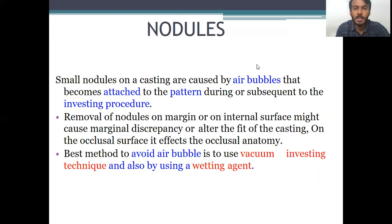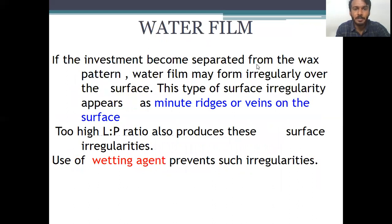On the occlusal surface, nodules usually affect the occlusal anatomy. The best method to avoid air bubbles is to use the vacuum investing technique and also by use of a wetting agent. Regarding water filling — if the investment becomes separated from the wax pattern, water filling may form irregularly over the surface. This type of surface irregularity appears as minute ridges or veins on the surface, and is due to too high a liquid-to-powder ratio and lack of use of any wetting agent. We have to use a proper wetting agent to prevent this kind of irregularity.